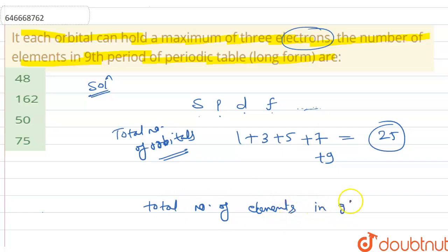In ninth period, that is equal to 25 × 3, that is 75, because one orbital having three as the maximum electrons, so that means we have to multiply by three. So your required answer is 75, option D is correct.